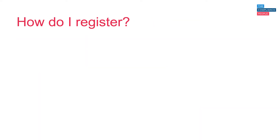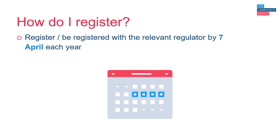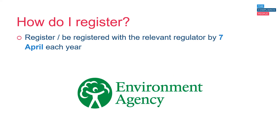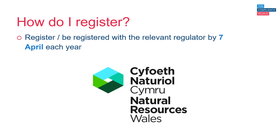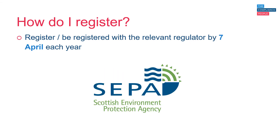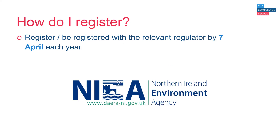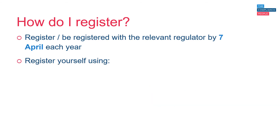So how do you register? You need to register, or be registered, with the relevant regulator by the 7th of April each year. In England this is the Environment Agency; in Wales it's Natural Resources Wales; in Scotland it's the Scottish Environment Protection Agency; and in Northern Ireland it's the Northern Ireland Environment Agency. There are two ways in which you can register: you can register yourself using the National Packaging Waste Database, or you can join what's known as an approved compliance scheme.